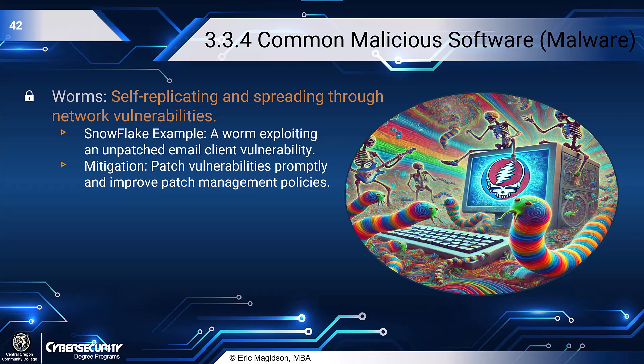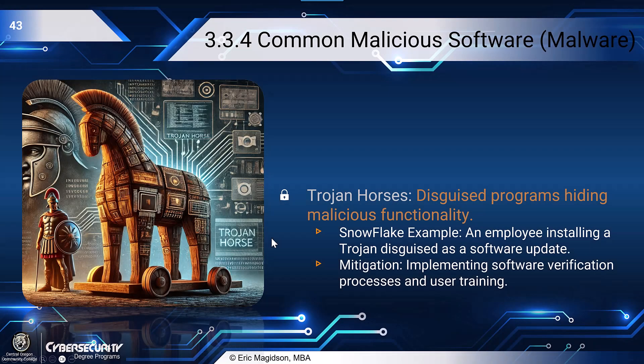Worms are a specific type of virus that self-replicates. The Morris worm was written to self-replicate itself across a network. Snowflake's example is a worm exploiting an unpatched email client vulnerability — perhaps in Outlook — spreading from person to person across the network until the network is full of worms with whatever payload they carry. And of course, we're back to patching. All of these images, by the way, are created by AI — ChatGPT for the most part.